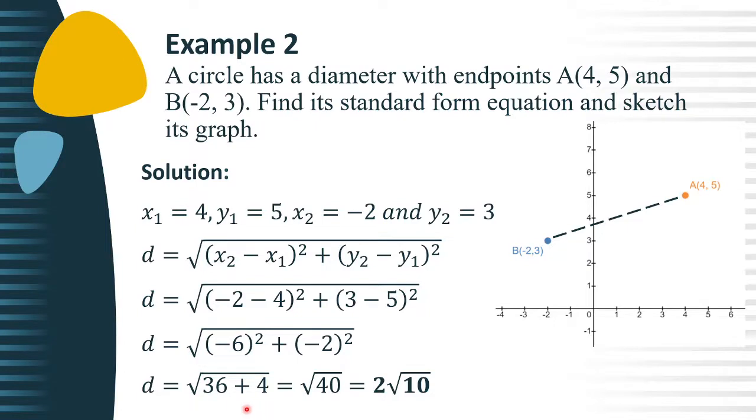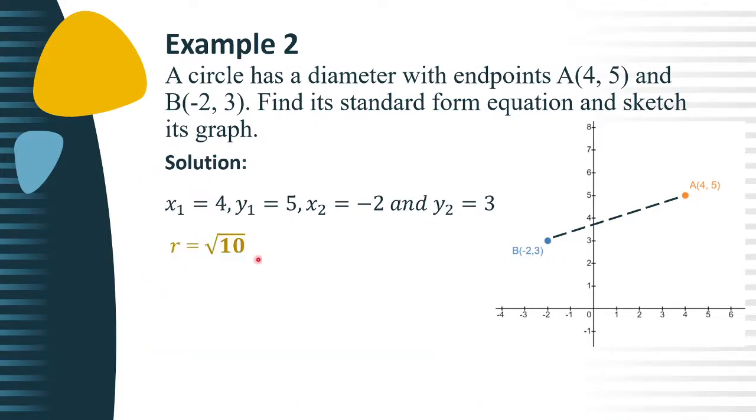Combining like terms, 36 plus 4 equals positive 40. Extracting the square root, we have 2 square root of 10. Since the radius of the circle is half of the diameter, then r equals 2 square root of 10 over 2, which equals square root of 10. Therefore, the radius of the circle equals square root of 10.